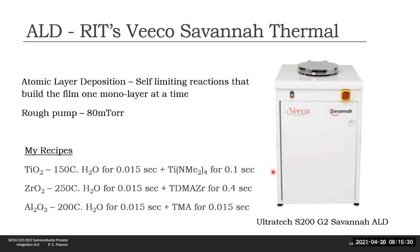For titania, tetrakis dimethylamidotitanium was used. For zirconia, tetrakis dimethylamidozirconium. And for alumina, trimethylaluminum was used. Titania was deposited at 150 degrees C, zirconia at 250 degrees C, and alumina at 200 degrees C. These temperatures were chosen based on the corresponding documented deposition rates.